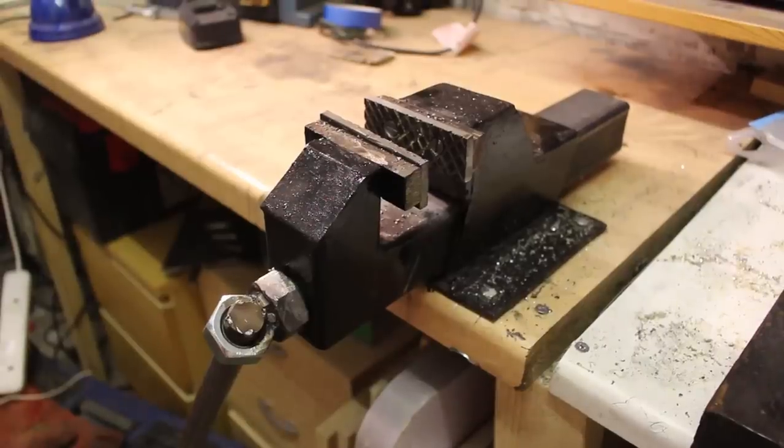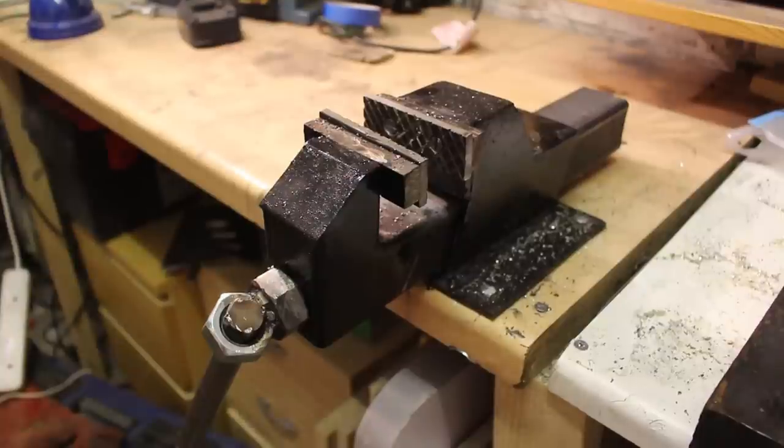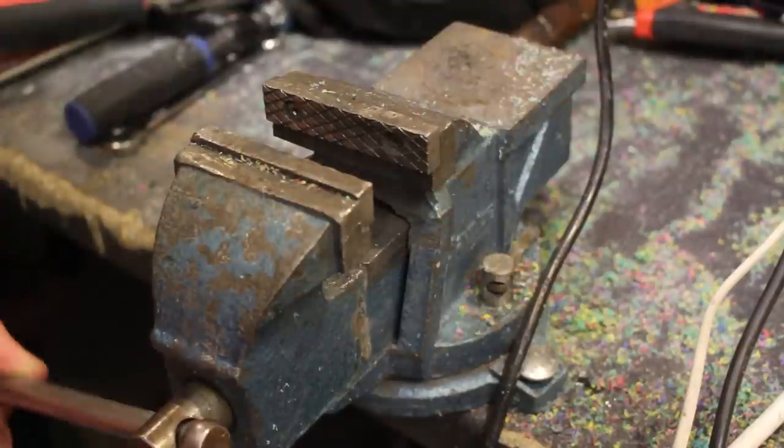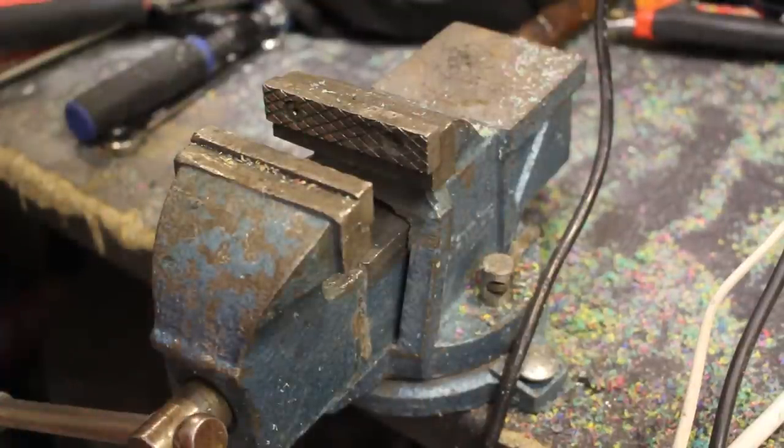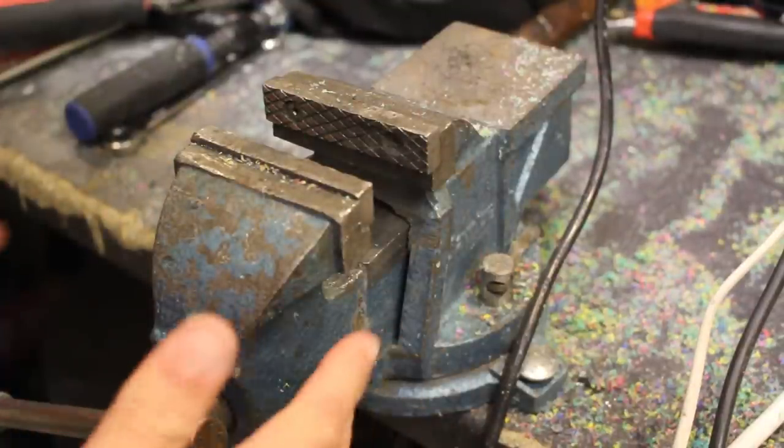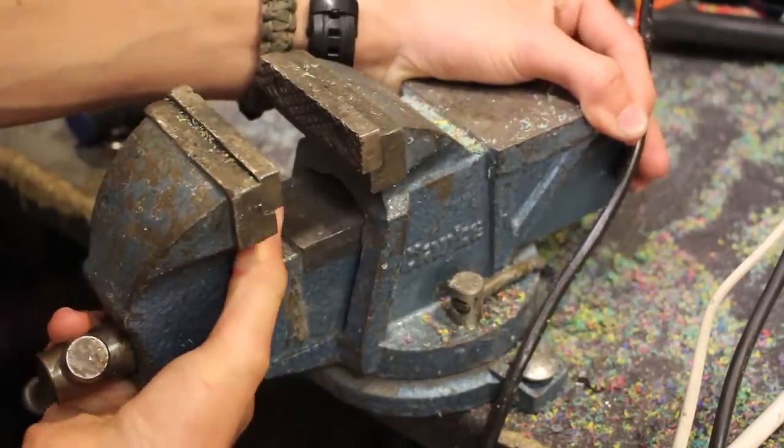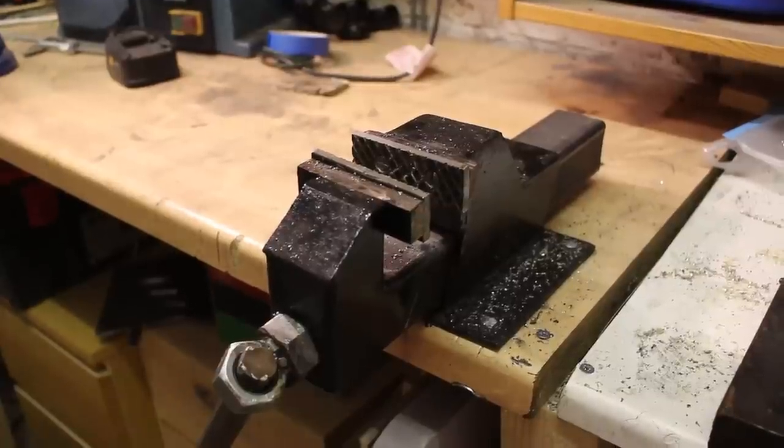I actually already have a bench vise that I use in pretty much every project. It's a really cheap cast iron bench vise, pretty small with limited clamping power. Sometimes when I'm sawing, things move about and slip out of it, and it also spins around.